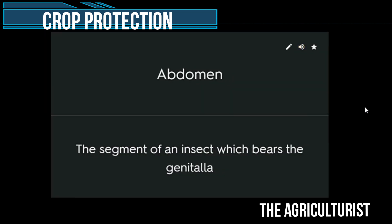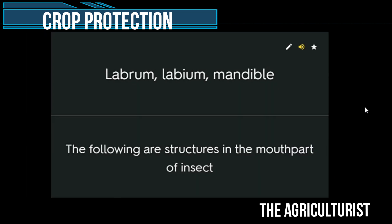Abdomen — the segment of an insect which bears the genitalia. Labrum, labium, mandible — the following are structures in the mouthparts of an insect.